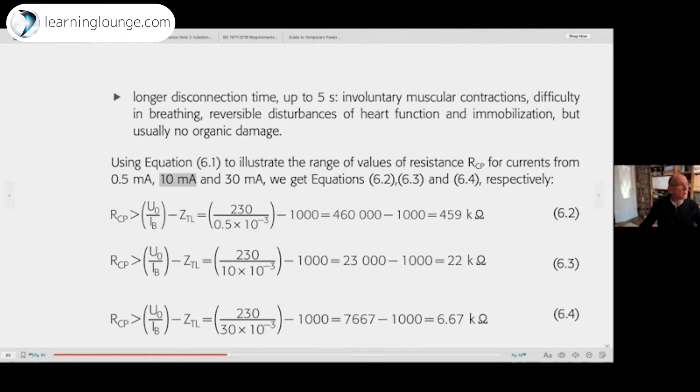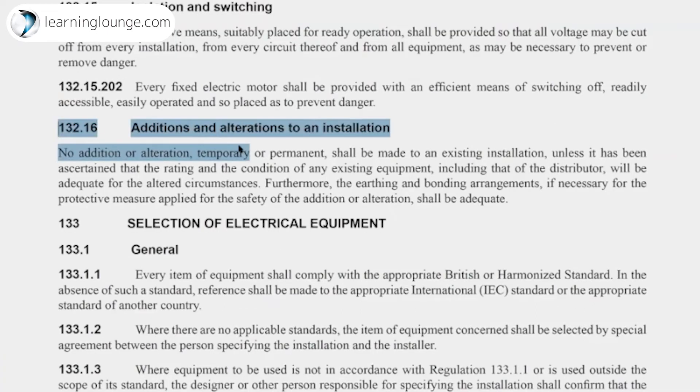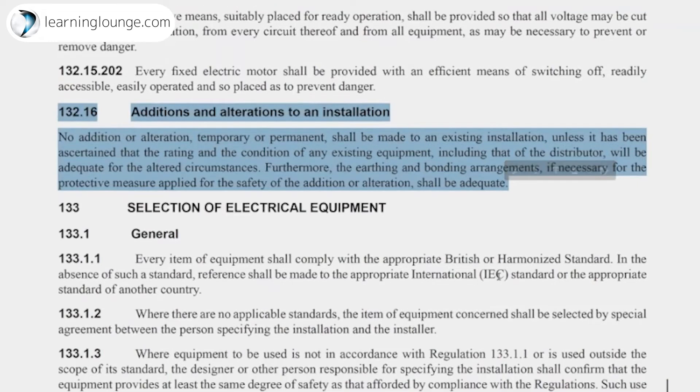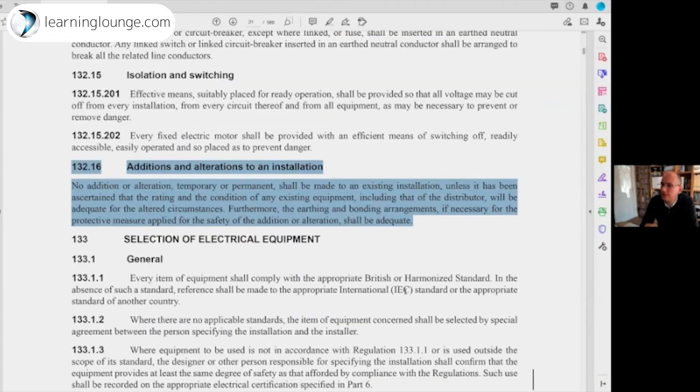I want to swap screens and take you to regulation 132.16, which is in part one here. It states that no addition or alteration, so the addition would be the extra socket outlet or the alteration there, temporary or permanent, shall be made to an existing installation unless it has been ascertained that the rating and the condition of the existing equipment. So if you felt that you wanted to add a socket outlet and it was going to draw an additional load current and put pressure on the equipment, the cable and that, you shouldn't do it unless it was altered for the circumstances. There's a full stop there. Furthermore, the earthing and bonding arrangements if necessary for the protective measure applied for the safety of that addition or alteration shall be adequate. So if there is no bonding in place you have to do it before you take on that little extra job. There's going to be people out there that don't, but for safety reasons it's essential that you do that, and obviously that would comply with the wiring regulations.